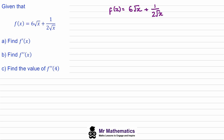The first thing we're going to do is write the roots using index notation. Because this is one over the square root of x, it will become x to the negative one half. Now that we have it using powers we can differentiate with respect to x.